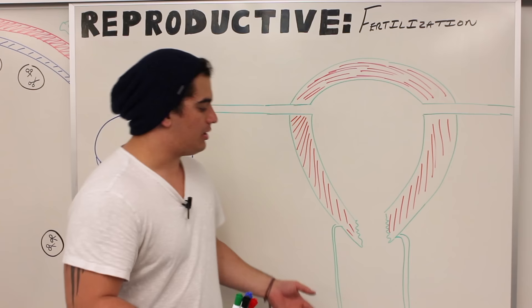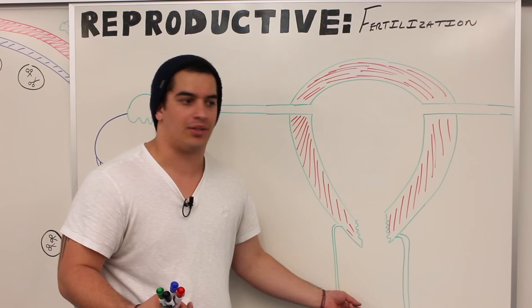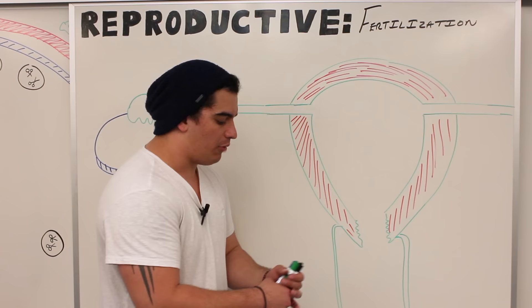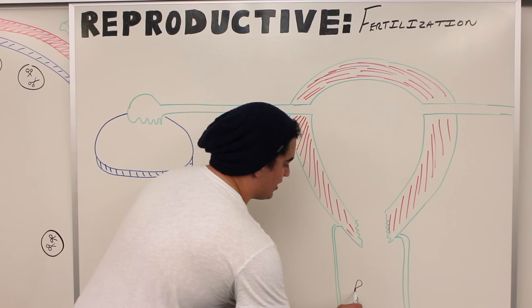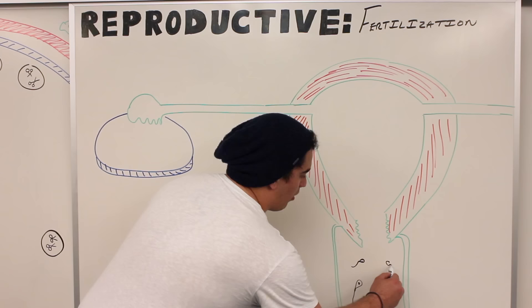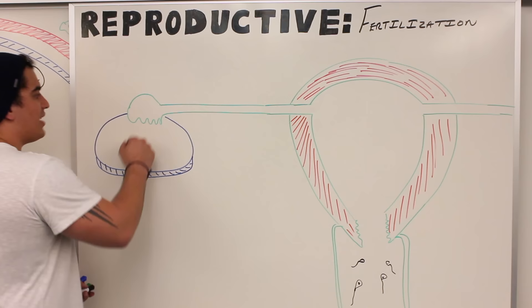In this video we're going to talk about fertilization. If you remember from our ejaculation video, we got to the point where sperm has been ejaculated from the male genital tract. Depending upon if copulation — sexual intercourse — is occurring, if the sperm is ejaculated and placed into the female genital tract, then we have to follow this sperm all the way to the egg.